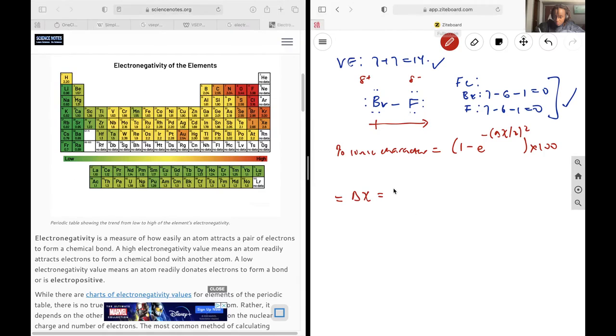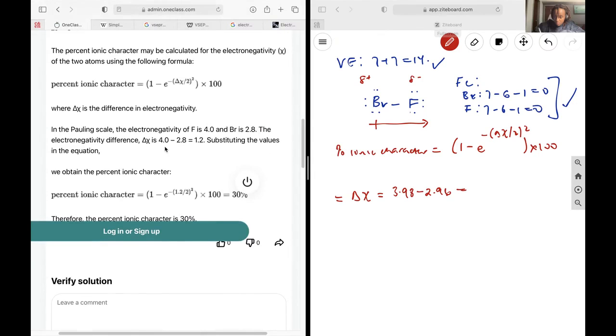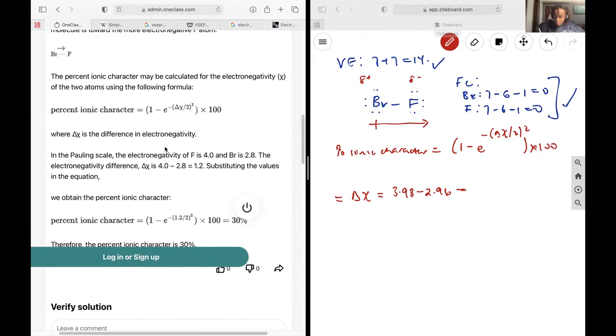And that is going to be 3.98 minus 2.96. Just one moment, and that is going to give us 1.02. Your value may be different, but it should be close depending on what resource you use for the electronegativity values.